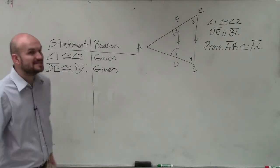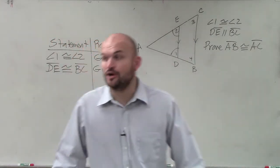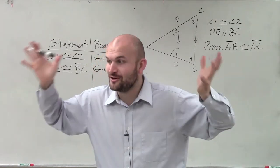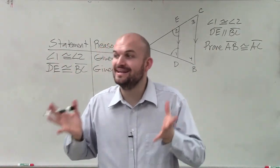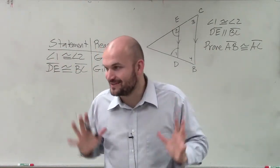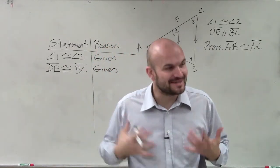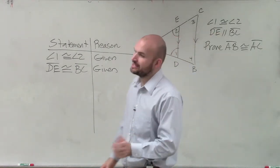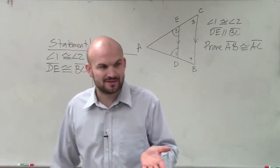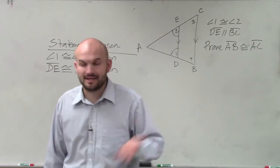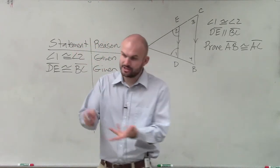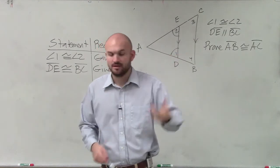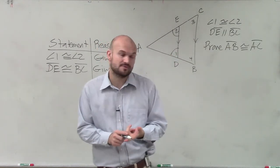Whenever we see that two lines are parallel, we know to always look for angle relationships. When we have parallel lines and a transversal — a line that intersects them — we get alternate interior, alternate exterior, and corresponding angles, which are equal in measure. And then we have consecutive interior angles, which add up to 180.